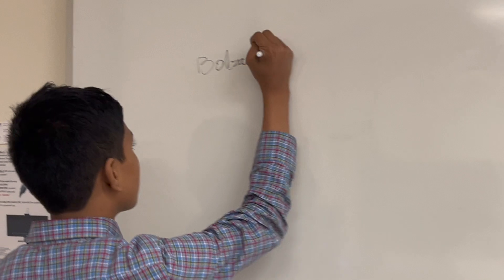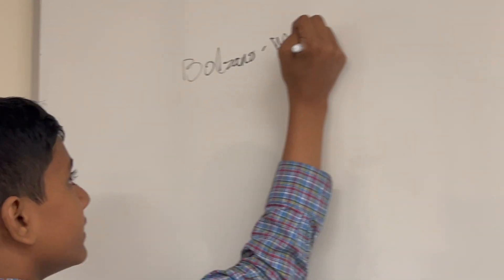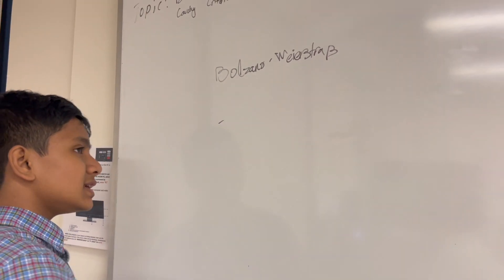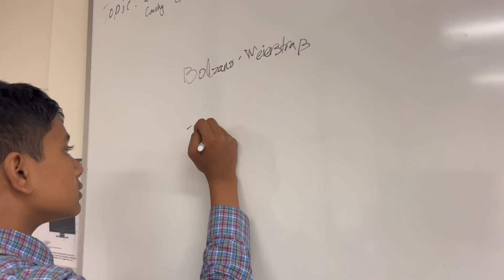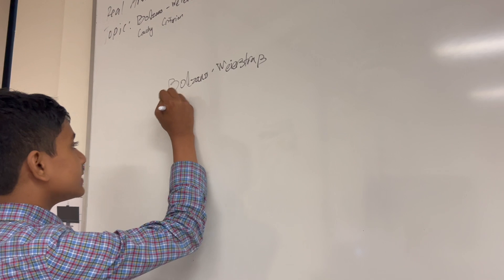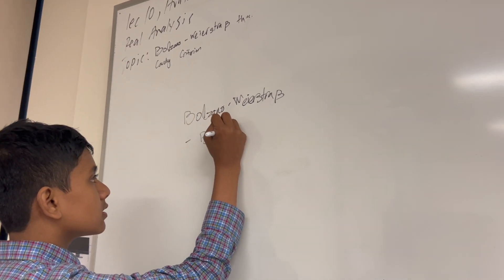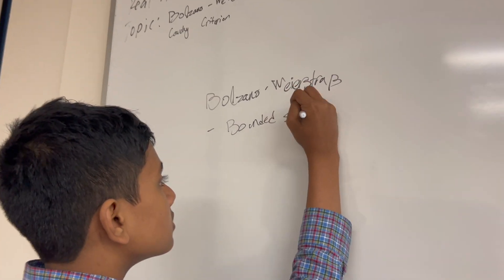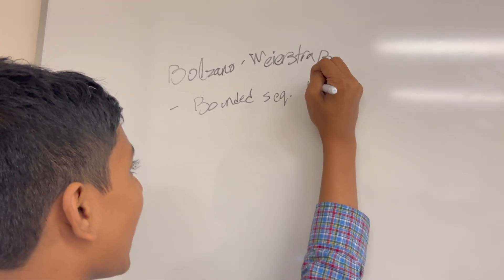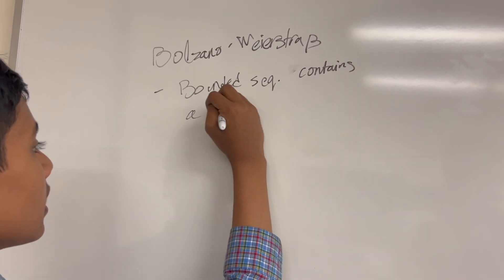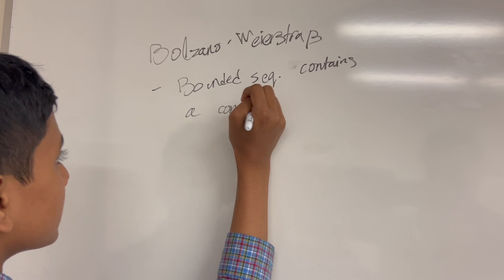So let's start with the Bolzano-Weierstrass theorem. You might remember this from last time, but we actually didn't get to cover it in detail and prove it. So let's rehash it. The Bolzano-Weierstrass theorem is essentially just every bounded sequence has, or rather contains, a convergent subsequence.